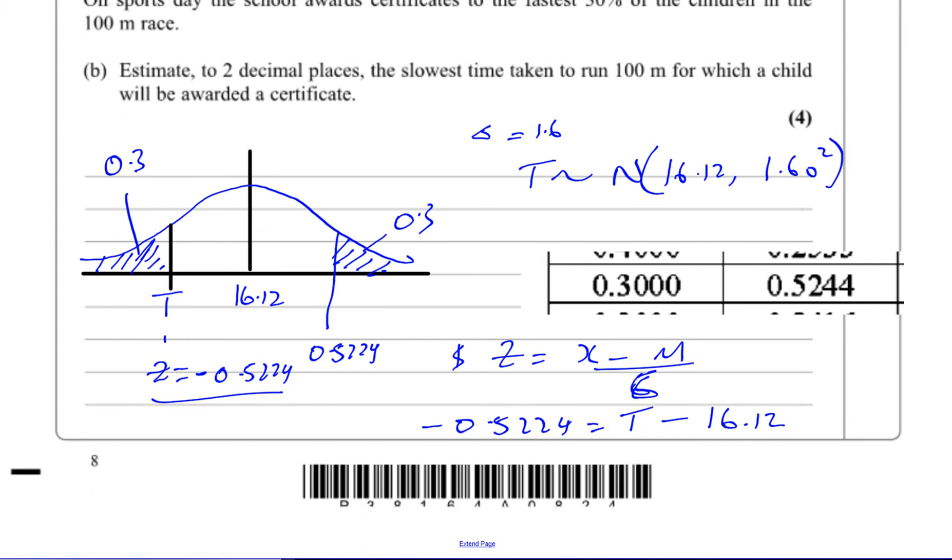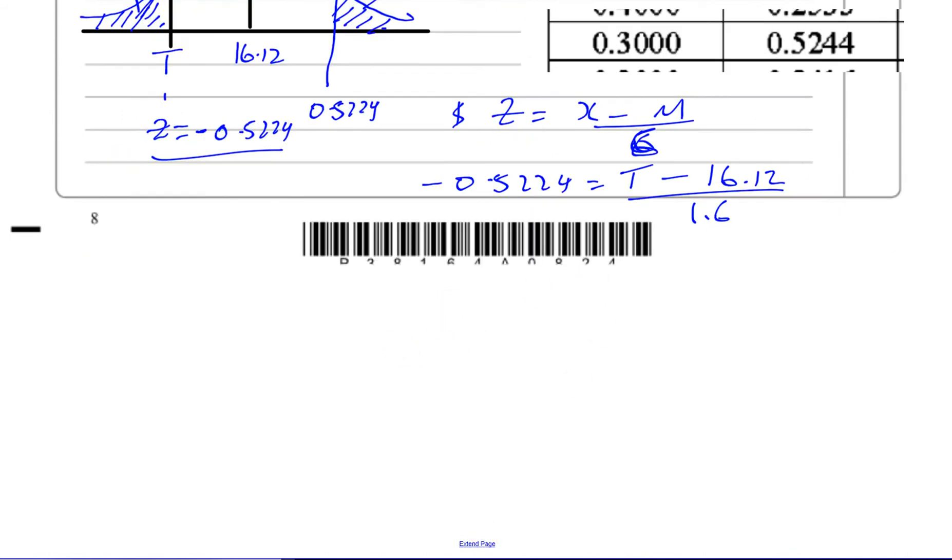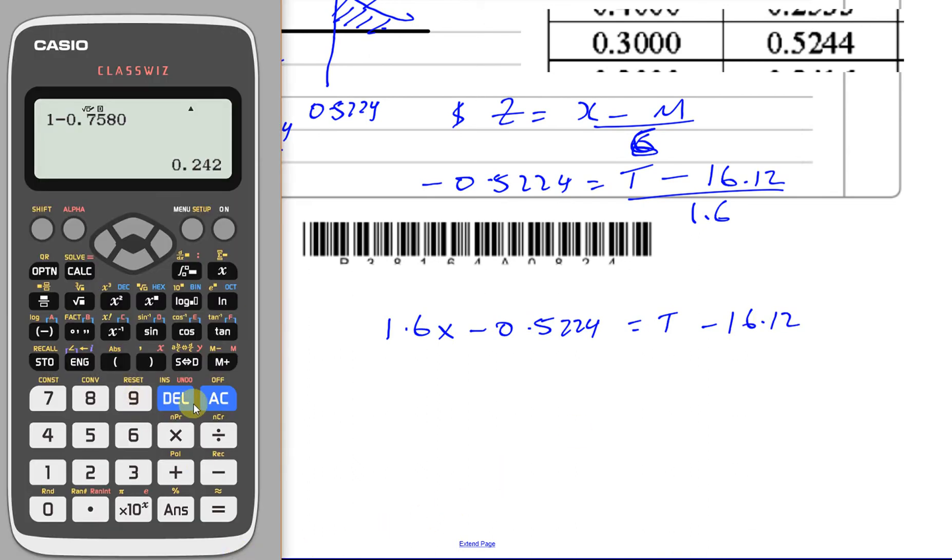So we're going to have 1.6 multiplied by minus 0.5224 is equal to T minus 16.12. So we'll just do that, 1.6 multiplied by minus 0.5224 and add 16.12.